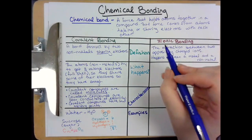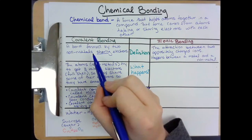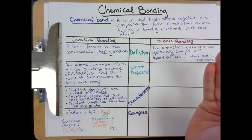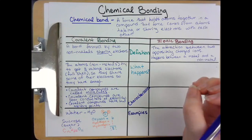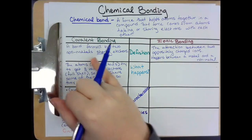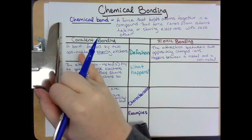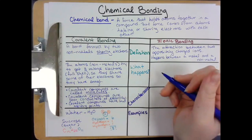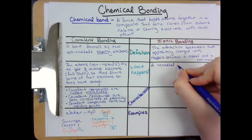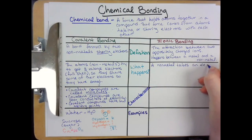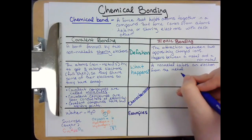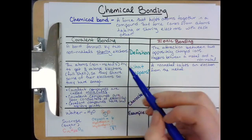So let's compare the definitions of ionic and covalent bonds. Covalent bonds happen between two nonmetals; ionic bonds happen between a metal and a nonmetal. So if you're given an example and asked whether it's a covalent or ionic bond, and you have your periodic table, you can look — if there's a metal there, it's going to be an ionic bond, because covalent bonds only happen between nonmetals. So what actually happens in ionic bonds? The nonmetal takes an electron from the metal. That's different from a covalent bond, where they're sharing — splitting the electron between them.